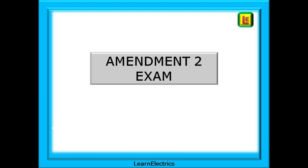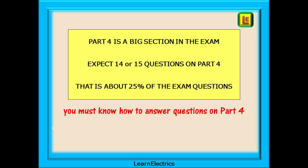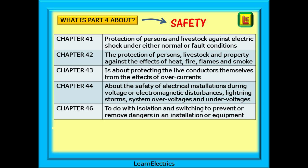A little bit about Part 4 and the Amendment 2 exam now. Part 4 is a big section in the exam. Expect 14 or 15 questions on Part 4 — that's about 25% of the exam questions. You really must know how to answer questions on Part 4. What is Part 4 about? Safety. And this table gives a brief description of the scope of each chapter. Knowing what each chapter is about is going to help in finding answers quickly.